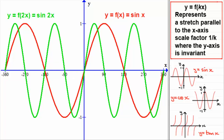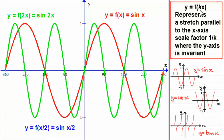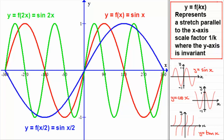Now let's look at the graph of y equals f of a half x, or x over 2. We're replacing x in sine x with x over 2, giving us sine of x over 2. In this example k is a half, so this represents a stretch parallel to the x-axis, scale factor 1 divided by a half, which is 2. So it's going to represent a stretch parallel to the x-axis, scale factor 2.